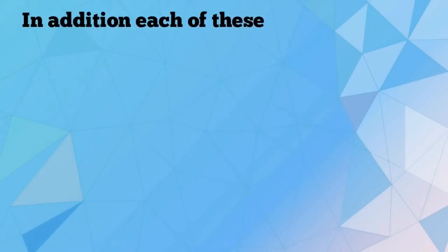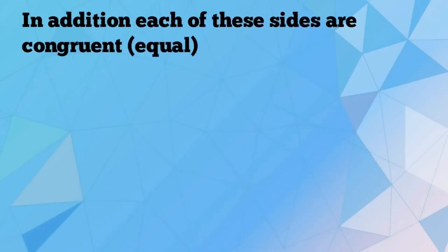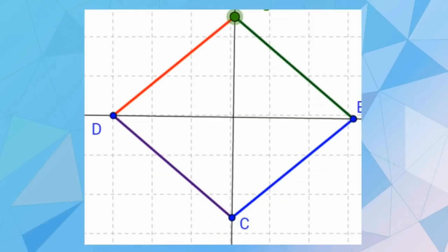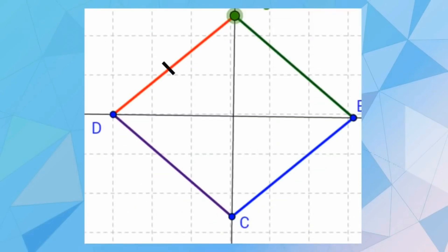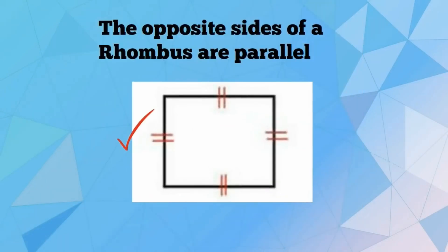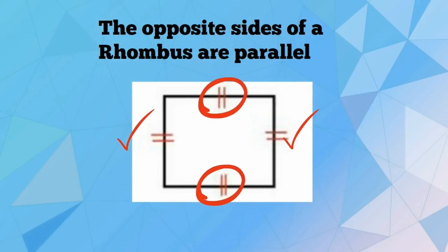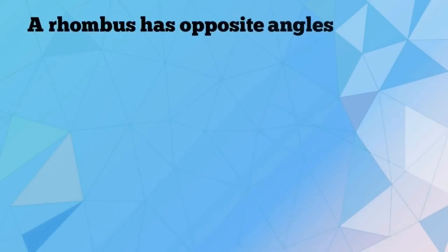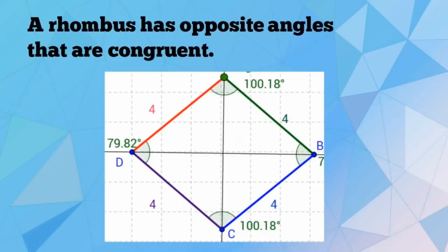In addition, each of these sides are congruent or equal. The opposite sides of a rhombus are parallel. A rhombus has opposite angles that are congruent.